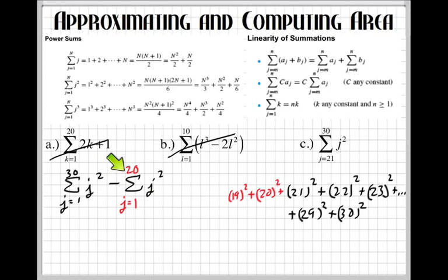So this second part takes away all the extra numbers that we don't want. But now we can use, since this is j to the second power, we can use this formula right here to simplify. So this one right here, we're going to plug in 30 to the formula, to the power sum, and this one right here, we're going to plug in 20.